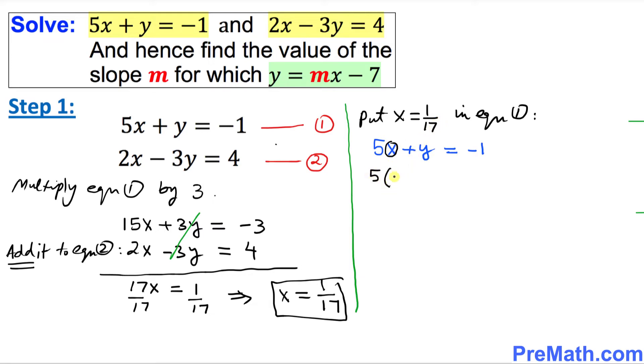So we got 5 times 1 over 17 plus y equal to negative 1, so we got 5 over 17 plus y equals negative 1. Let's move this 5 over 17 on the other side.